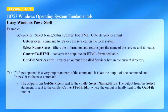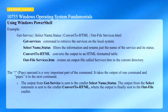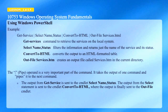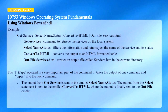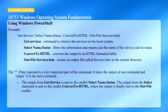Here's an example of using Windows PowerShell. The get-service command is used to retrieve services on a local system. The select name status filters the information and returns just the name of the service and its current status. The convert-to-HTML converts the output to an HTML formatted table, and out-file services.html creates an output file called services.html in the current directory. The pipe operator is a very important part of the command — it takes the output of one command and puts it into the next command.